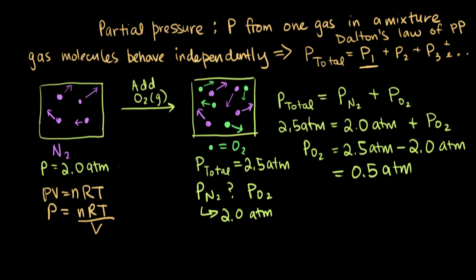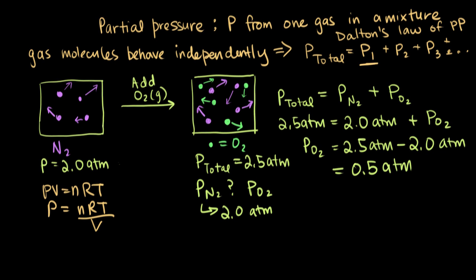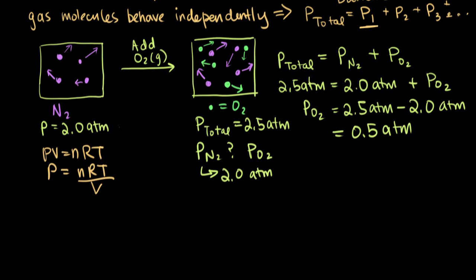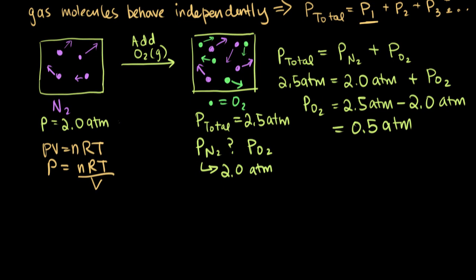So now we know how to use this particular expression of Dalton's law of partial pressures to find a partial pressure when you know the total pressure and the other partial pressures.